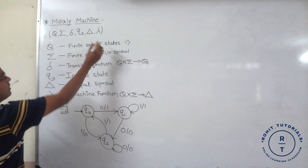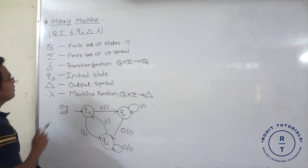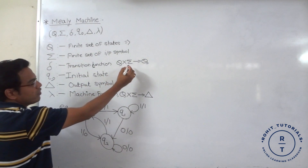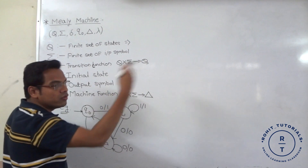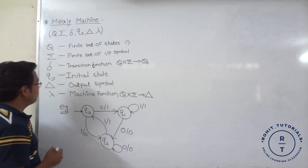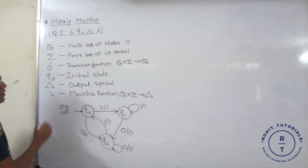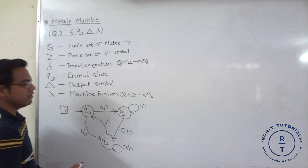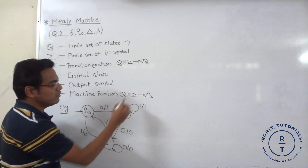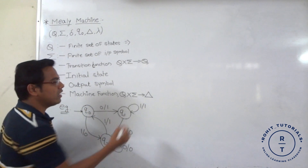Capital Q is the finite set of states. Summation is the finite set of input symbols. Transition function is represented by capital Q — for any input symbol, after it goes to the next state. Q0 is the initial state, delta is the output symbol, and last is lambda which is the machine function. Capital Q, for any input symbol, goes to or gives you the output symbol.